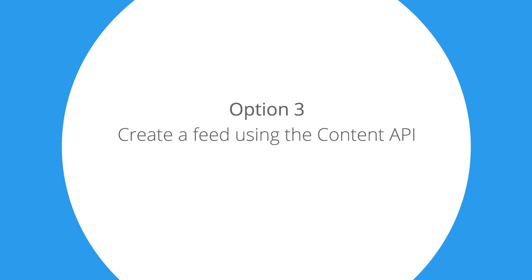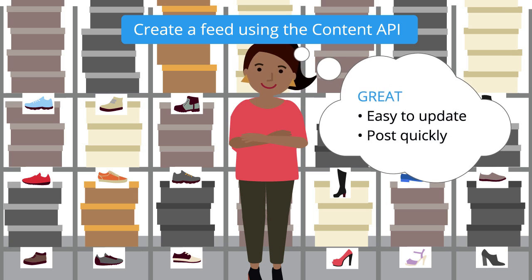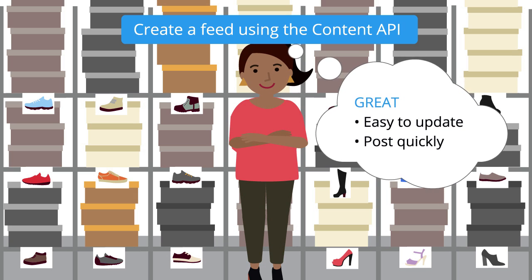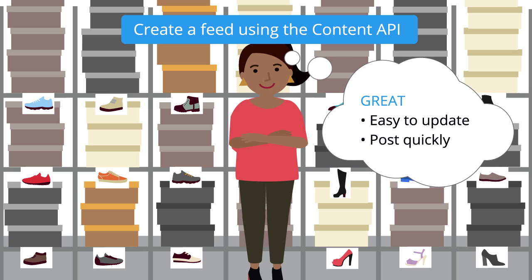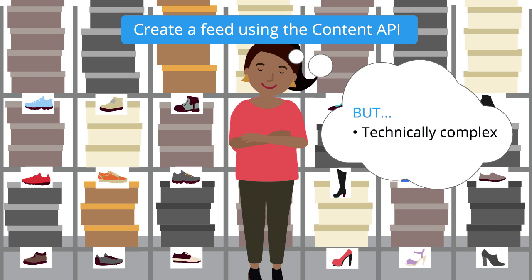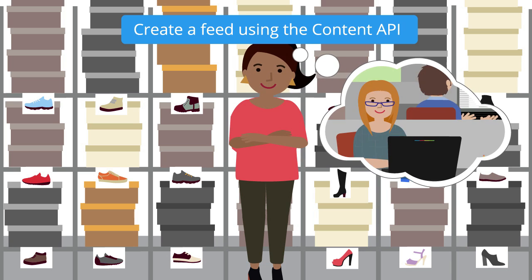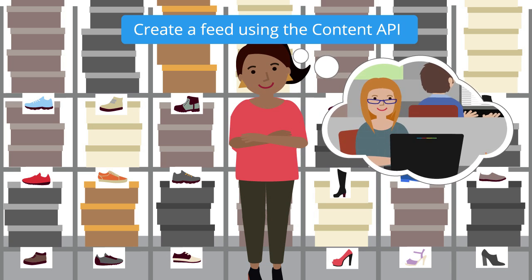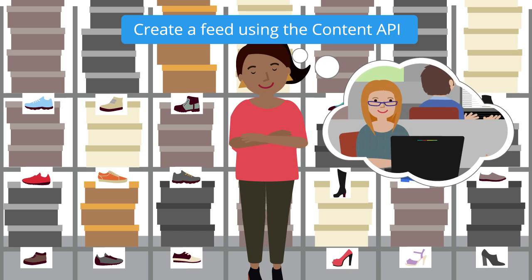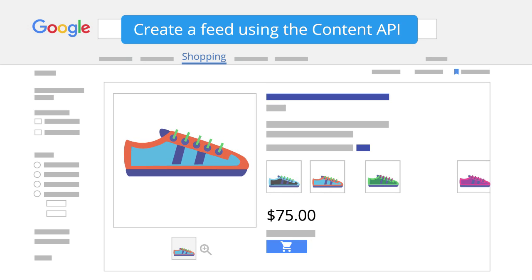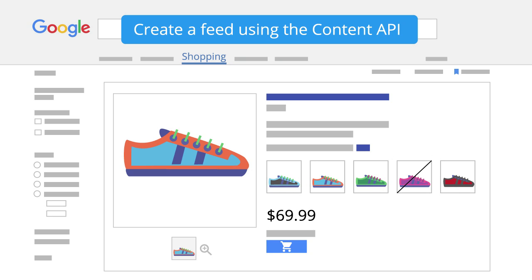Option 3: Create a feed using the Content API. The Content API works great for companies with lots of products or product updates, but you also need a dedicated IT team, so this option is only recommended for sophisticated retailers. It is the best way to keep products updated on Google, and they appear more quickly than any other option.